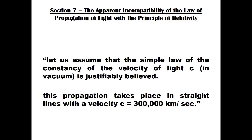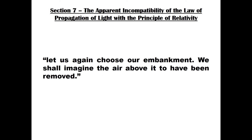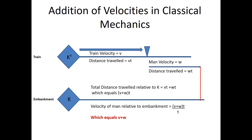To surface the problem, Einstein first establishes some ground rules. First, the velocity of light is constant in a vacuum. Second, this propagation takes place in straight lines with the velocity C equal to around 300,000 kilometres per second. And to cover the issue of a vacuum, he stipulates: let us again choose our embankment — we shall imagine the air above it to have been removed. So let's return to the embankment.